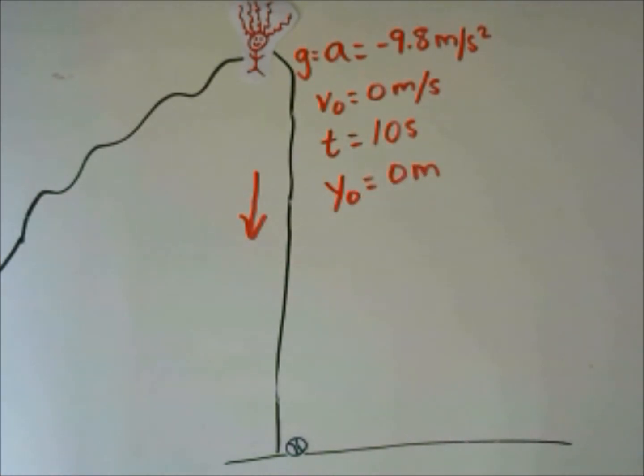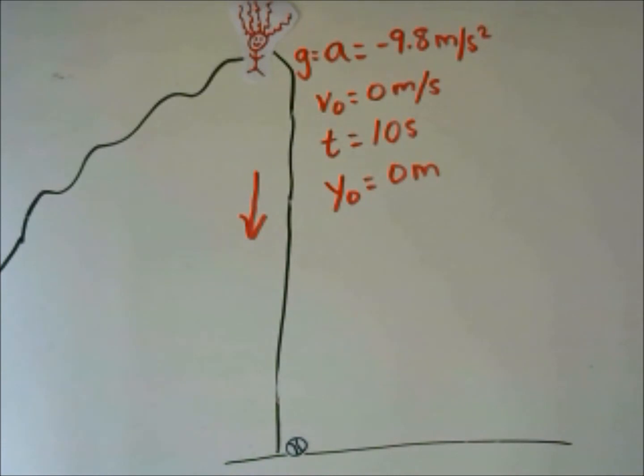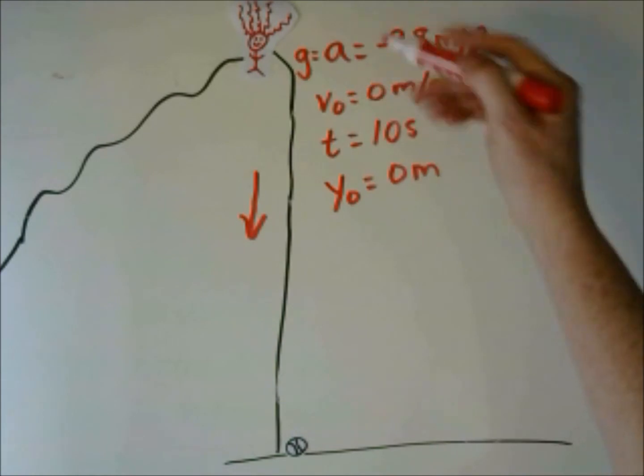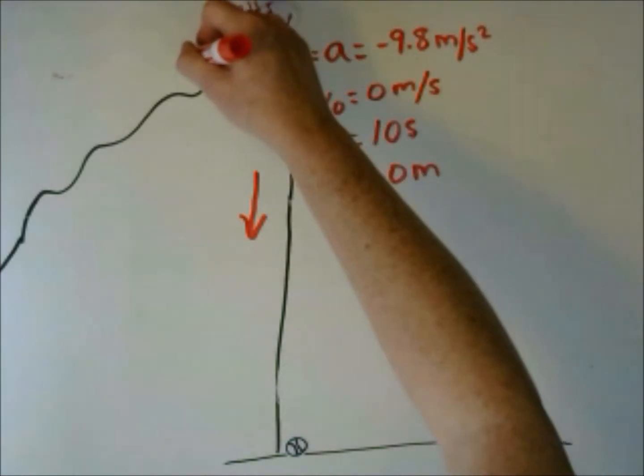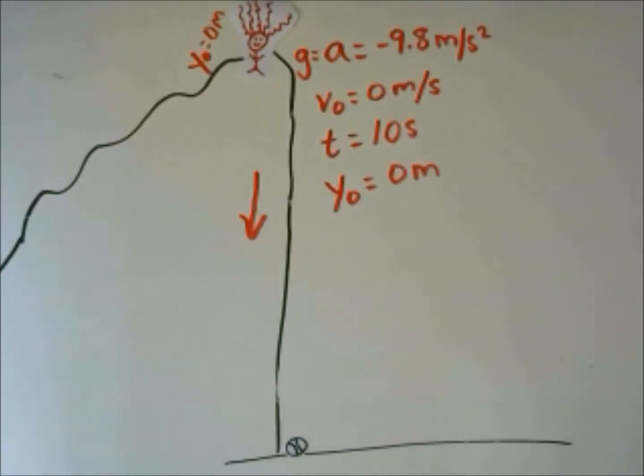In this case, we are not using the x-axis, we are using the y-axis, but we can treat it the same as the x-axis. The initial position we will set at 0, so where she is, is at y₀ equals 0 meters.